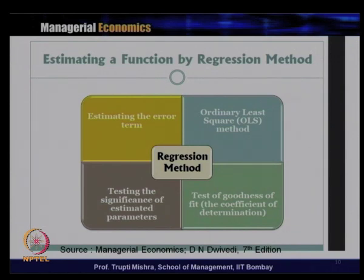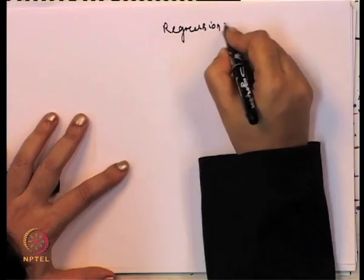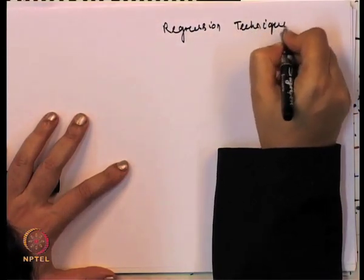Typically these four stages are followed in the regression method when we estimate a and b. First we estimate the error term through the ordinary least square method. Then after getting the value of the estimated parameter, we test their significance — what is the level of significance of these estimated parameters. Then we do the test of goodness of fit to understand the overall explanatory power of the model, or the overall explanatory power of the relationship between the dependent variable and the independent variable. The first step in a regression technique is always to estimate the error term.